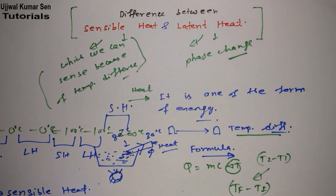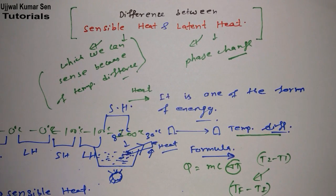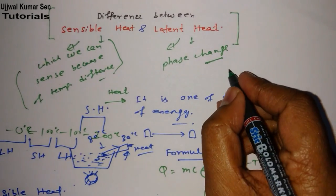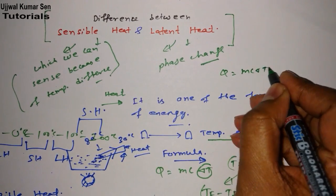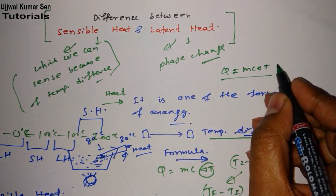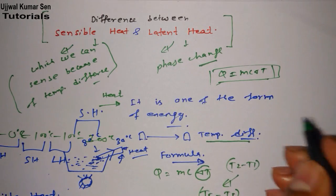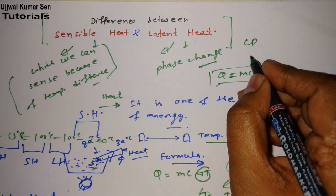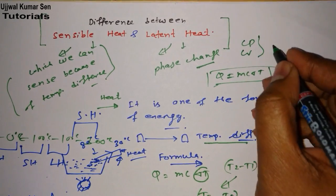Let me share a few other things about heat. If you are studying thermodynamics, sensible heat — that is Q equals mc delta T — the formula plays the most important role. For numerical problems, you should know Q equals mc delta T and also the specific heat values: specific heat at constant pressure and constant volume for air, and the specific heat at constant pressure for water.